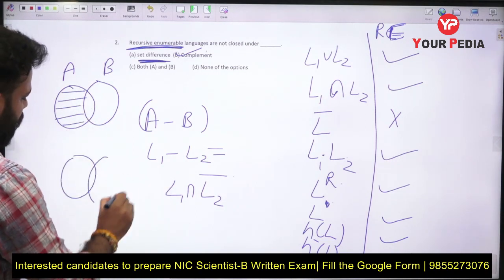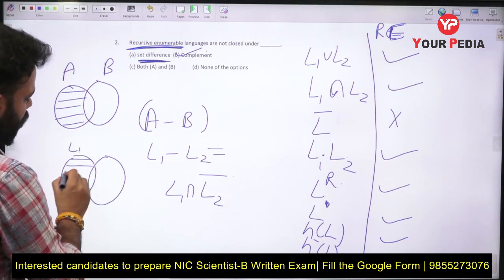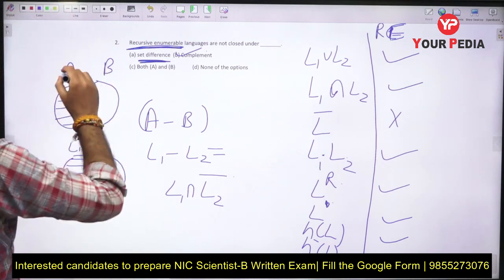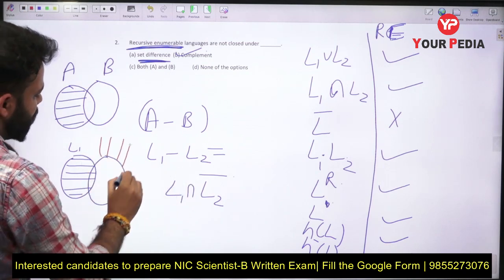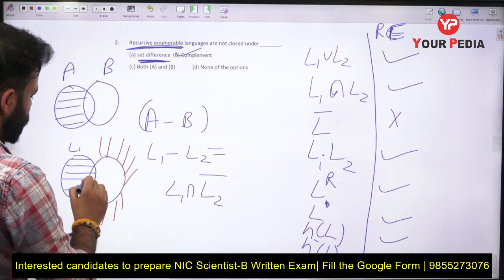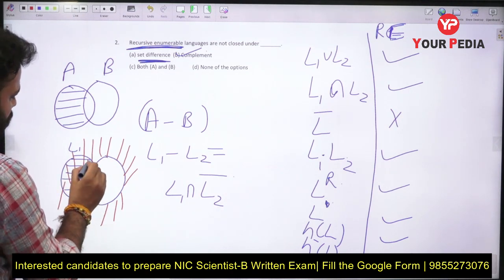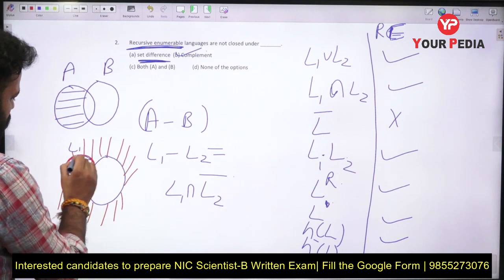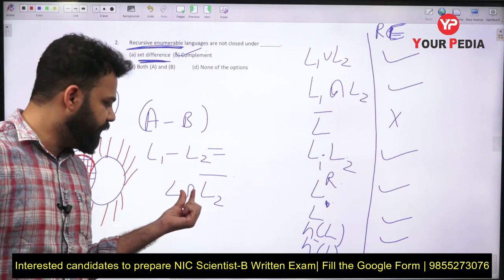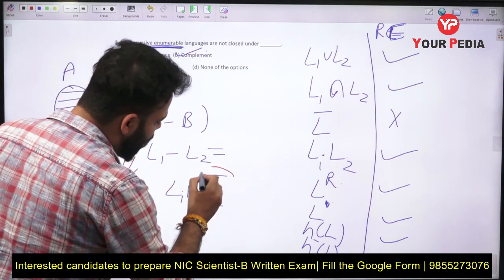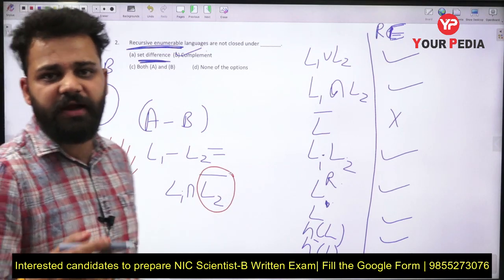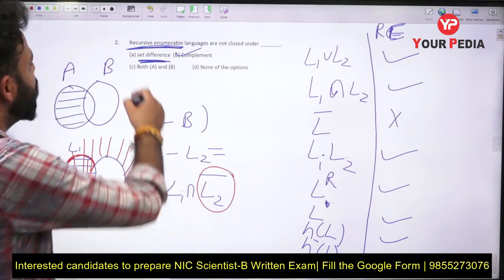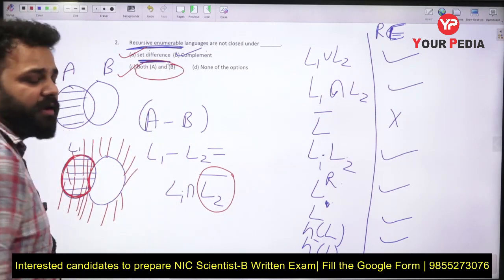If you take L1 and intersect it with the complement of L2, that gives you the set difference. Since RE is not closed under complement, and set difference uses complement internally — if L2 is recursive enumerable, it is not closed under complement, so it will not be closed under set difference either. Therefore both option A (complement) and option B (set difference) are correct answers.